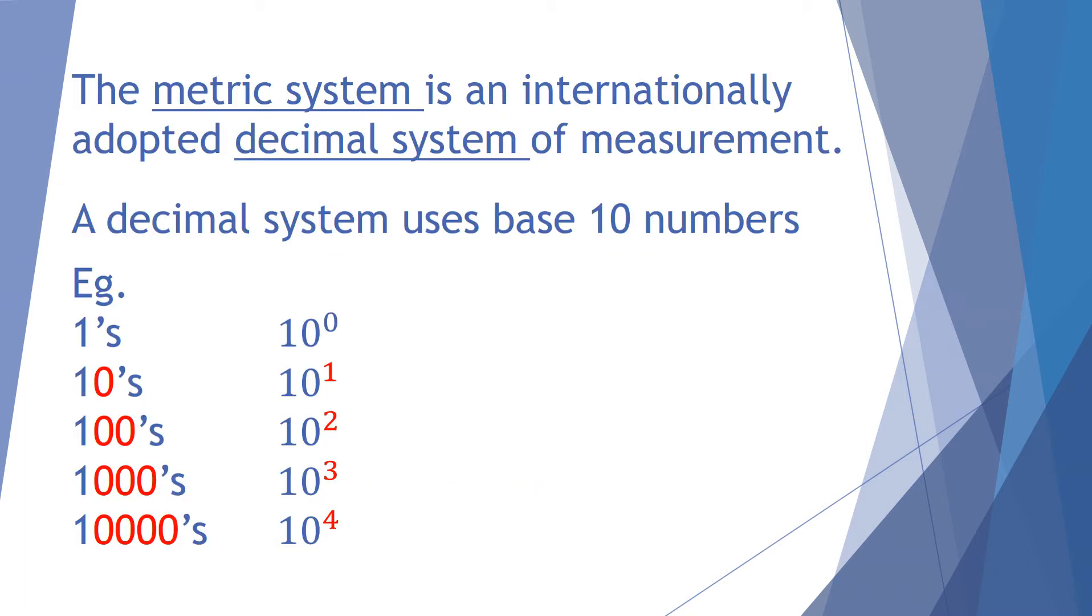The metric system is internationally adopted using the decimal system of measurement. Now as you know, decimal is to do with 10, so we know that a decimal counting system or currency even is based upon ones, tens, hundreds, thousands, and ten thousands. And when you think about it, a 10 is 10 to the power of 1, a hundred's 10 to the power of 2, thousand's 10 to the power of 3, and 10 thousands 10 to the power of 4, and ones is really just 10 to the zero.